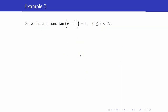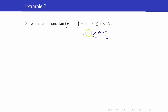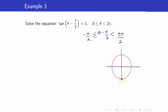Next, we have tangent of theta minus pi over 2 is equal to 1. Take note that your angle here is theta minus pi over 2. So that you will not miss out any solutions, you have to find the interval containing theta minus pi over 2. We subtract pi over 2 everywhere, so we have theta minus pi over 2 is between negative pi over 2 and 3 pi over 2. That means we are only interested from negative pi over 2 up to 3 pi over 2.